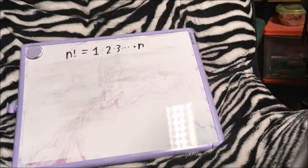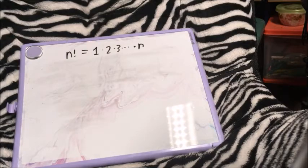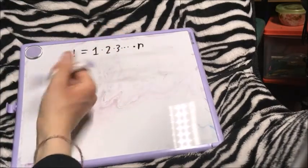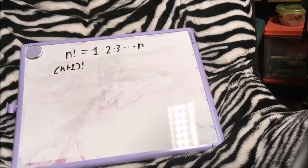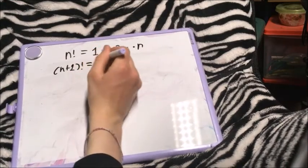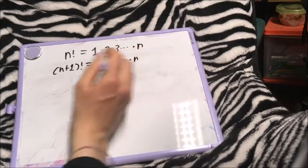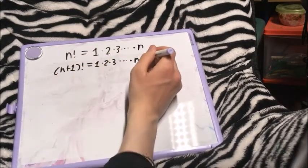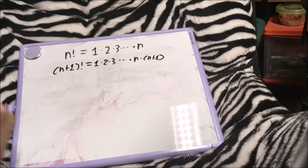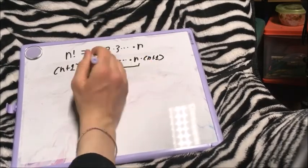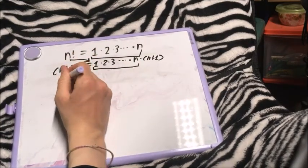We can use that knowledge of the factorial function to more generally define the function. Instead of looking for any specific number, let's see what happens when we change the variable directly. Going from n factorial to (n+1) factorial: this equals 1 times 2 times 3 all the way up to n, multiplied by (n+1). Rewriting it, we see that n factorial appears as a term, so we can substitute to get the equation (n+1)! = n! × (n+1).